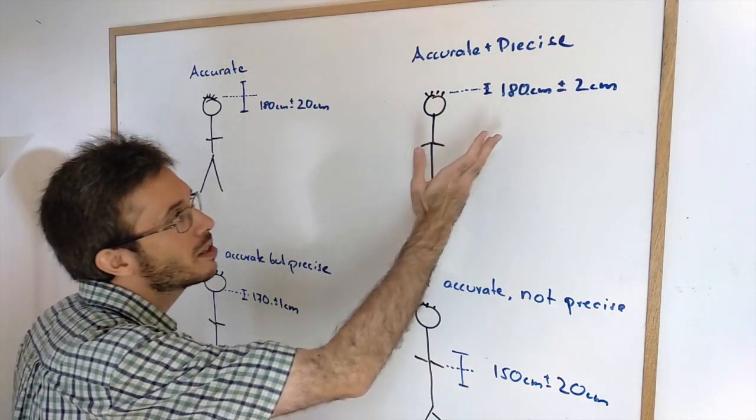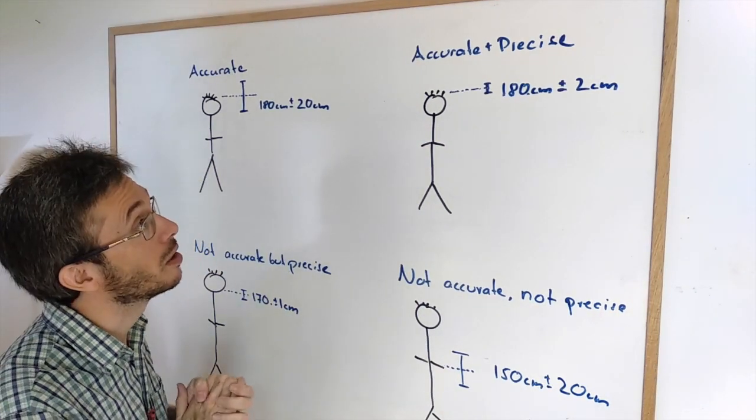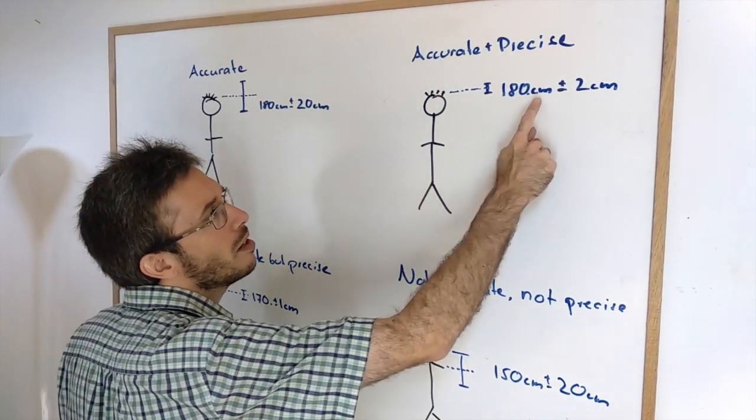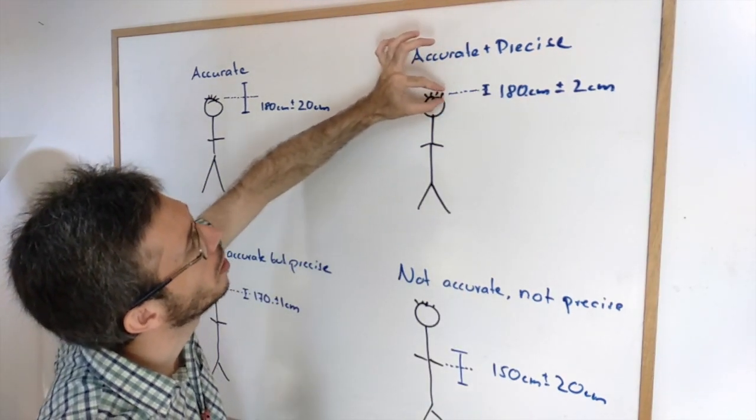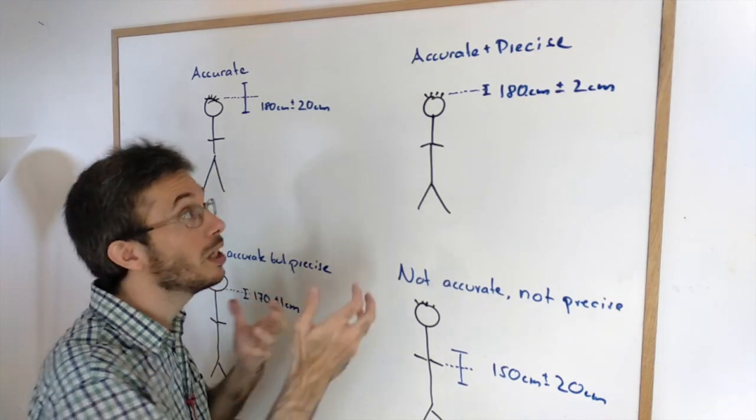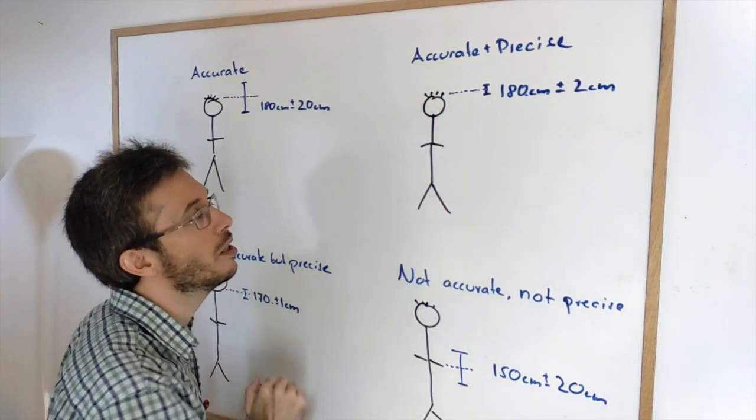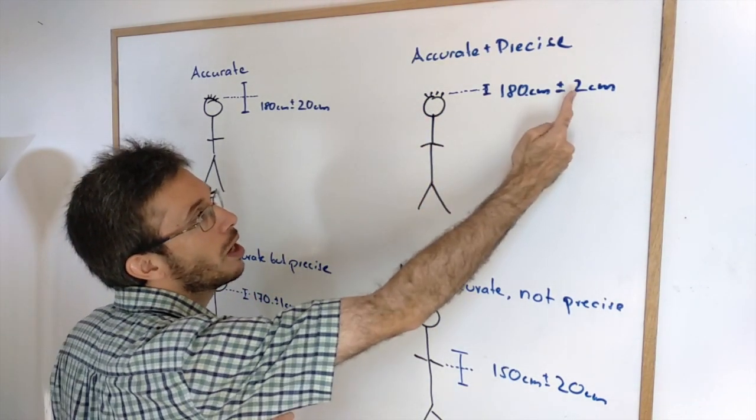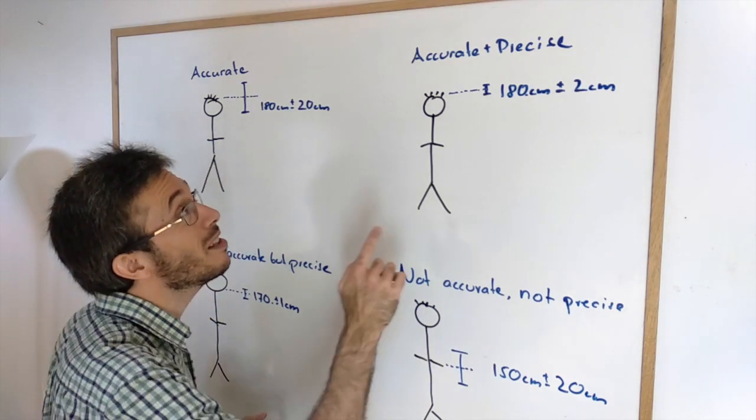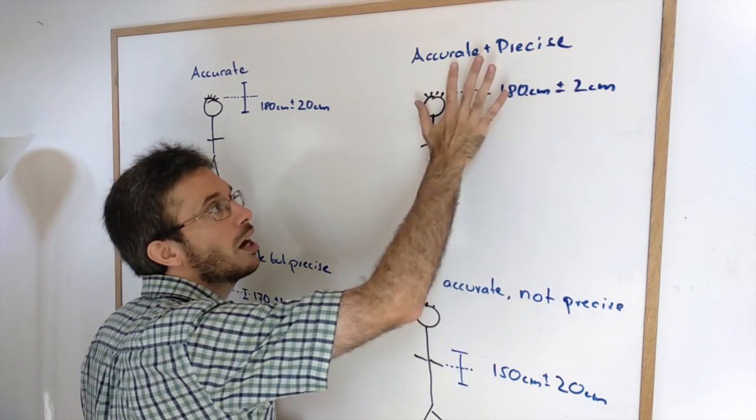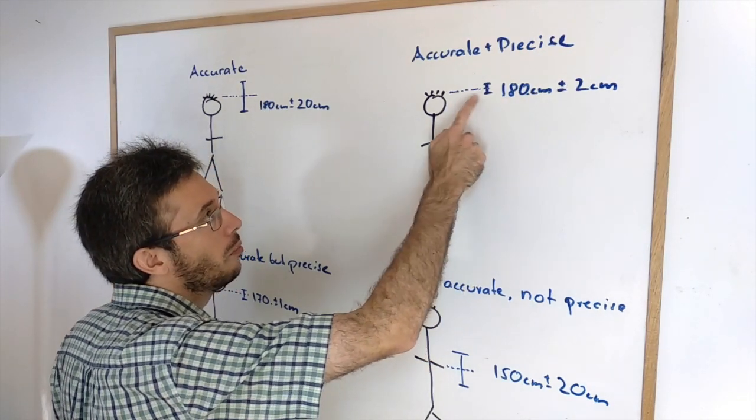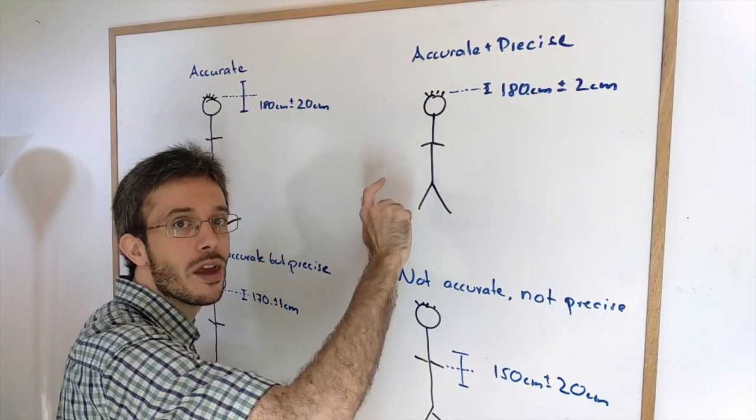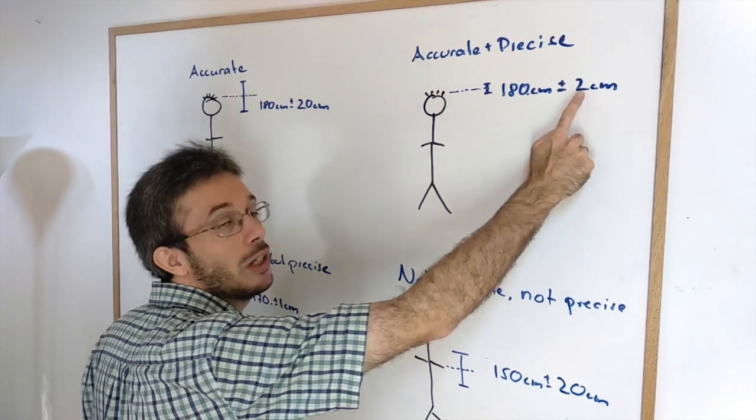Now the second measurement here I reported 180 centimeters plus minus 2 centimeters. If I look here I'm confident that the real height of that little person here is within my uncertainty given. So in this case my measurement is accurate and precise. Accurate because my real value is probably in there and precise because I have a very low uncertainty.